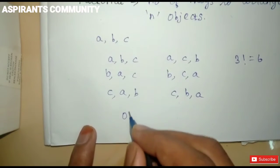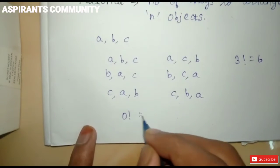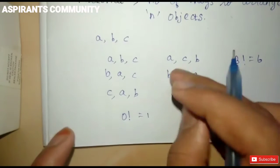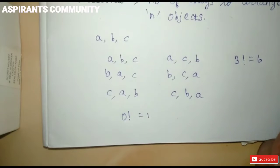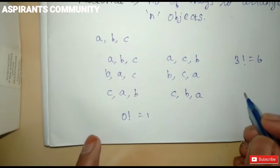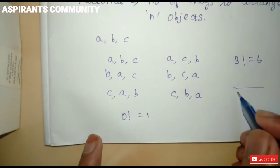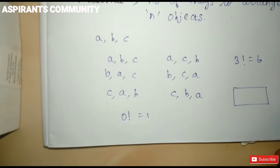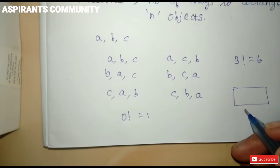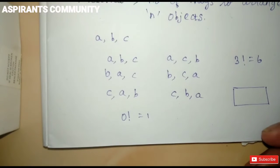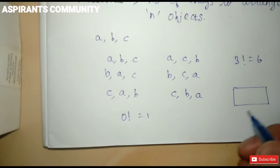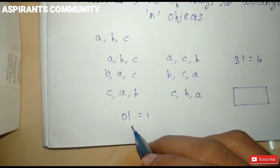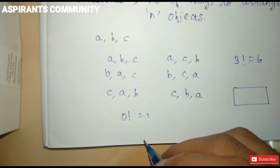Now let's think about 0 factorial. Suppose there is an empty box. If we arrange the contents of an empty box, there is only one way to arrange nothing. Therefore 0 factorial equals 1.